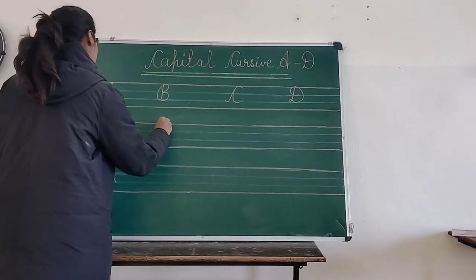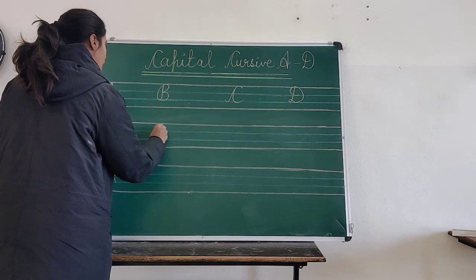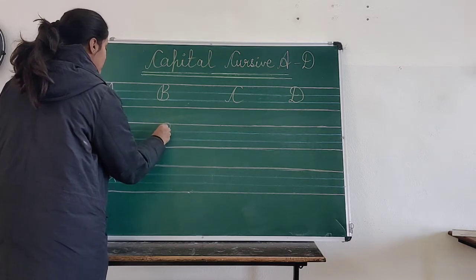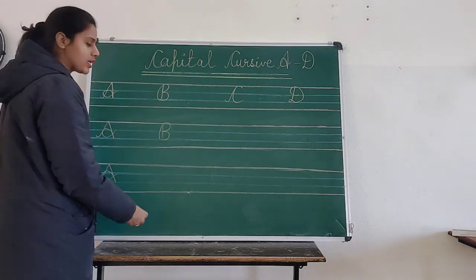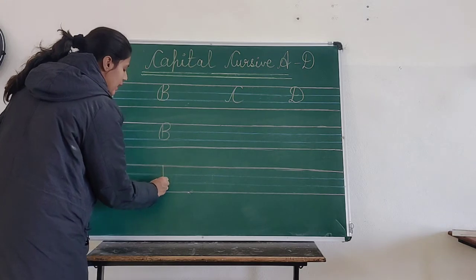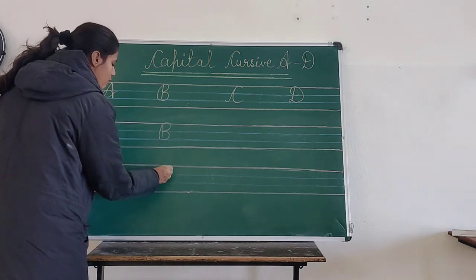One slanted line, go up, and then make one curve and another curve. Standing line, go up, one curve, and another curve.